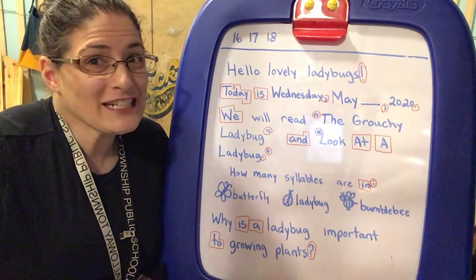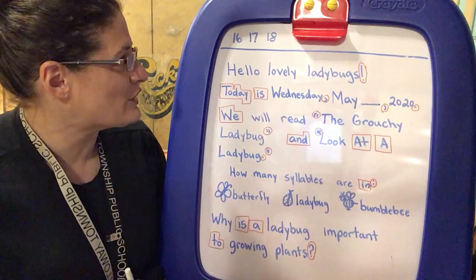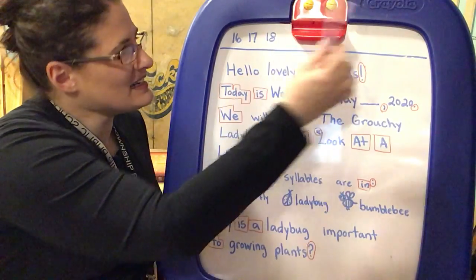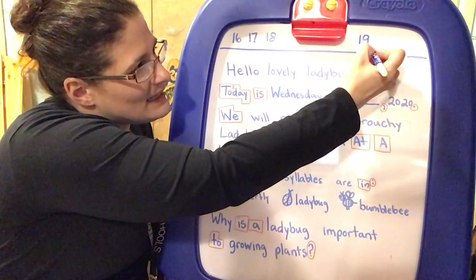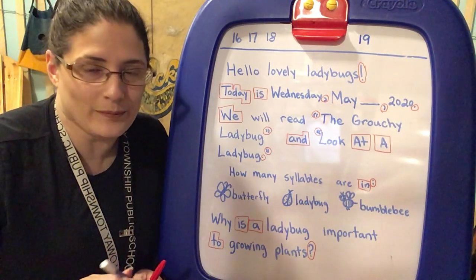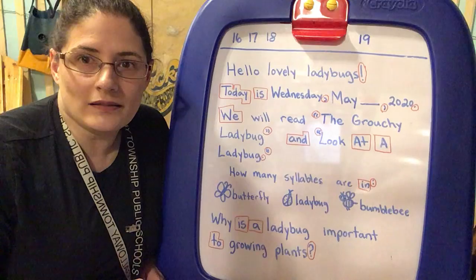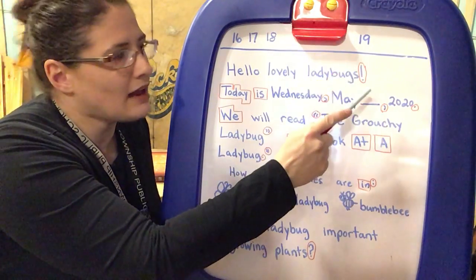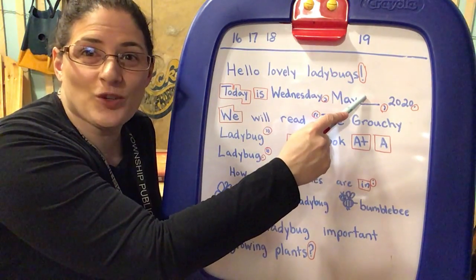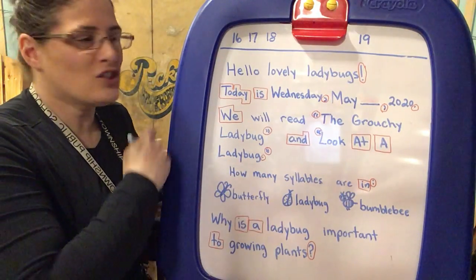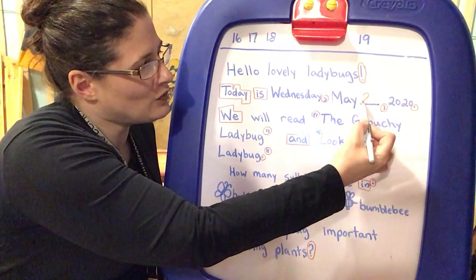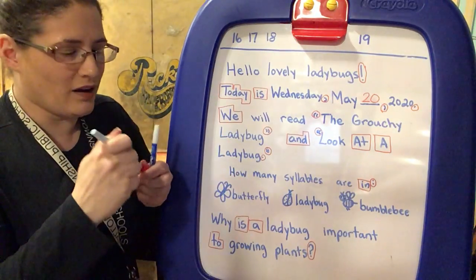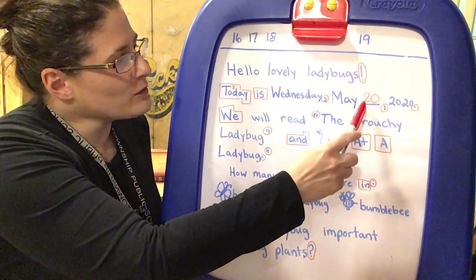Very special number today because we are moving out of our teen land numbers. Let's check — we have 16, 17, 18, and yesterday was 19. That's the last number in the teen numbers. So what number is it today? Let's count together: 16, 17, 18, 19. Did you say 20? You're right! 20 land — two and a zero. We are not in the teen land anymore. We are in the 20 land, which means our numbers will start with a number two.